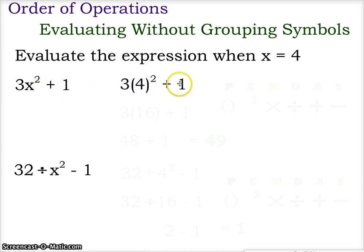We begin this process by substituting in the 4 for the x in the equation, and before we do the multiplication of 3 times 4, we have to do the exponent first. So 4 squared gives us 16. Now we have an expression of 3 times 16 plus 1.